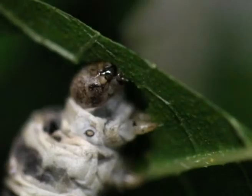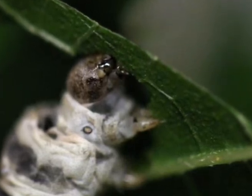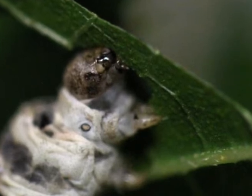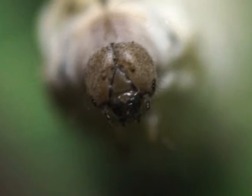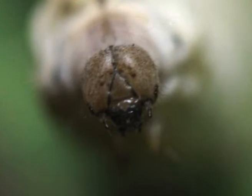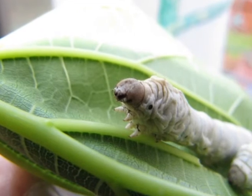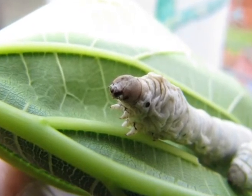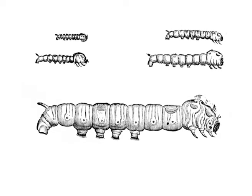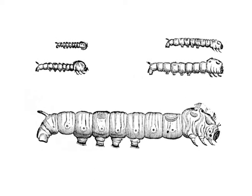The maxillae are also paired appendages but short, arising from the fifth segment of the head. Each maxilla has a basal portion made of two segments — the proximal cardo and the distal stipes. A maxillary lobe and a three-segmented maxillary palp are present on the stipes. Taste sensillae are located on this appendage and help in discrimination of the taste of food.